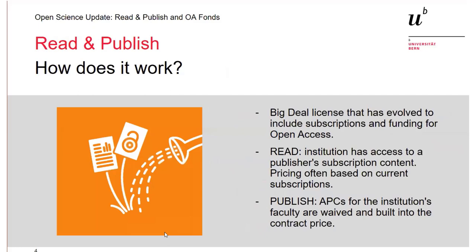These developments together brought about the new thing I'm here to introduce you to: read and publish deals. How does this work? It's actually relatively simple and it does pretty much what it says on the can. A read and publish deal is basically a big license deal that has evolved to include the subscription — so the library will still be able to offer you access to all the titles in a publisher's portfolio — but on top of that subscription it also pays for the APCs for open access publishing from the institution that has this deal. In other words, you can read the stuff a publisher brings out, and you can also publish in those journals if you are a faculty member of an institution that has a deal with the publisher as part of the consortium that negotiated this deal.